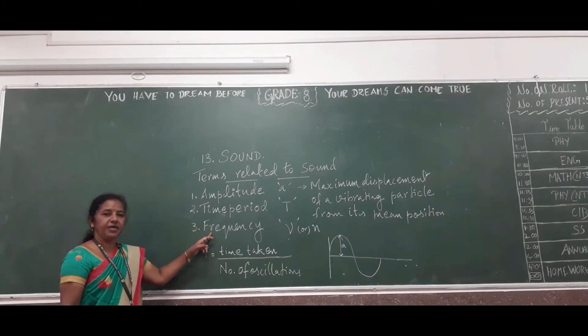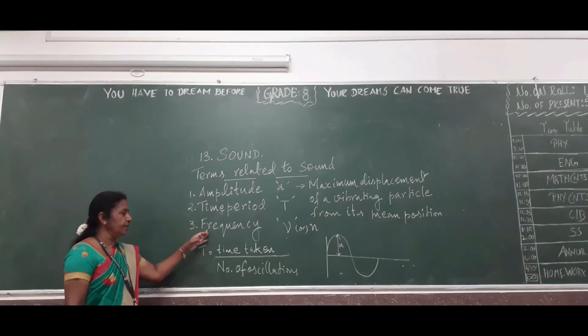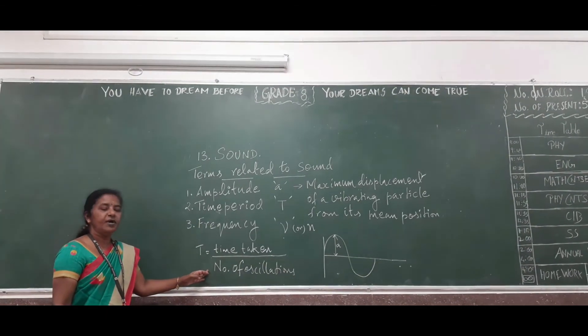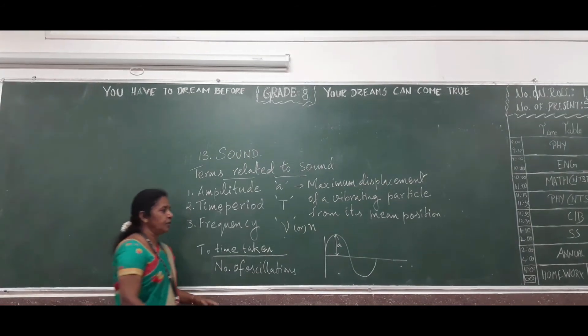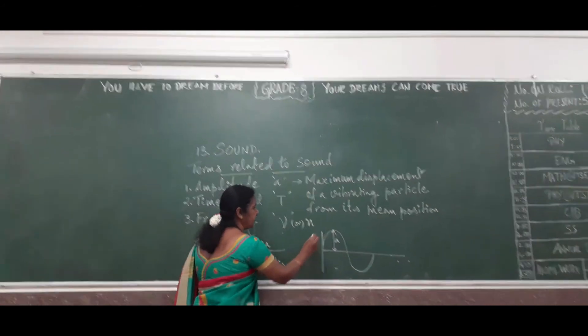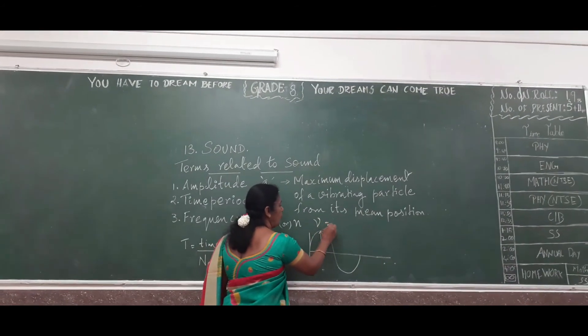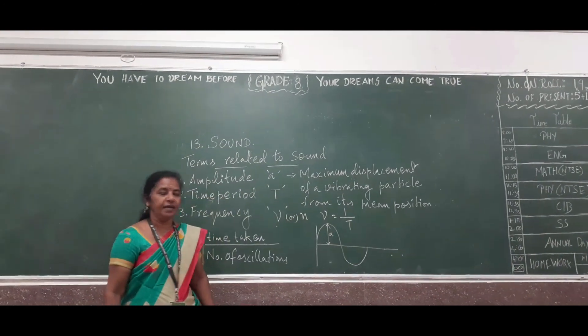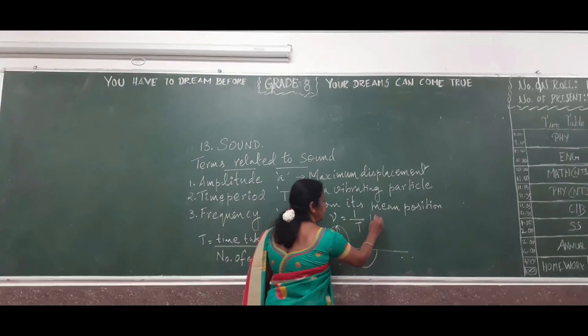Here, the last one is frequency. It is nothing but reciprocal of time period. That formula can be written as nu equals 1 by T, nu equals 1 by T. And its unit is Hertz, named after the scientist.